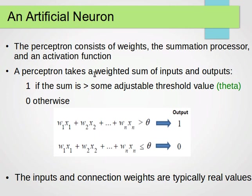A perceptron takes a weighted sum of inputs and outputs 1 if the sum is greater than some adjustable threshold value, theta, let's assume, 0 otherwise.